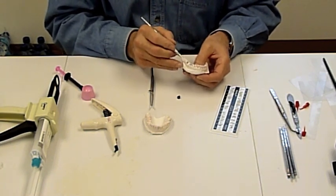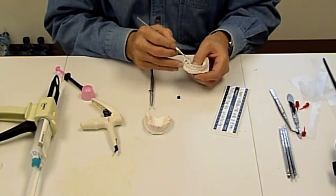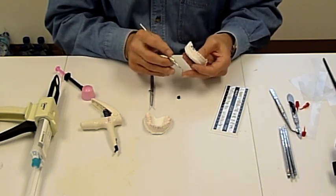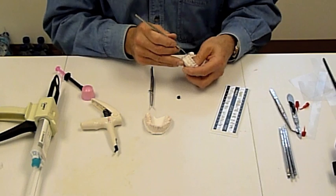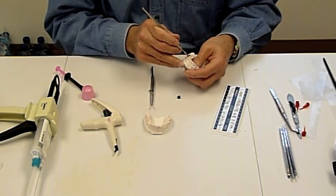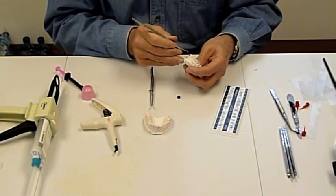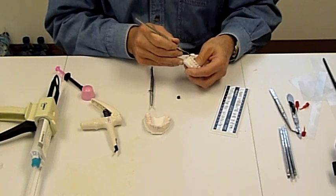A small amount of material. Remove the flash and position the bracket relative to the markings on the tooth.